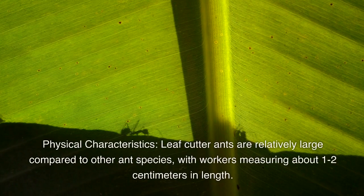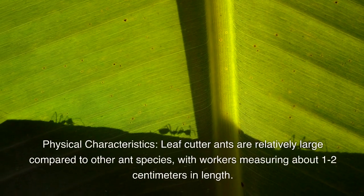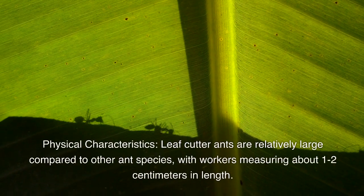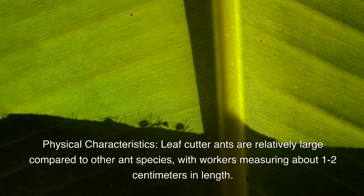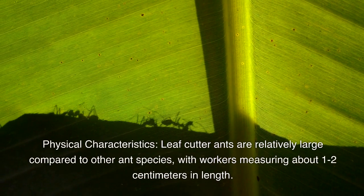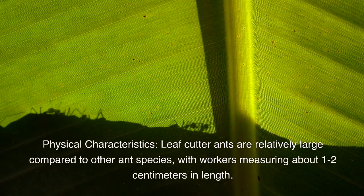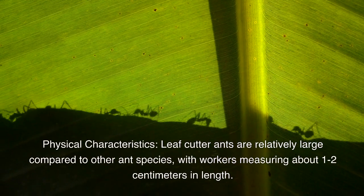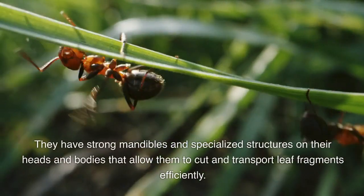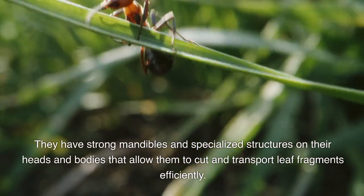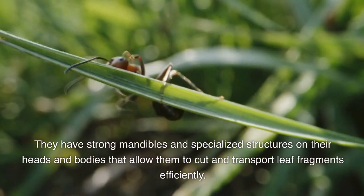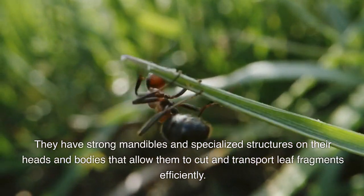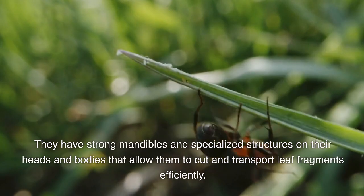Physical characteristics: leafcutter ants are relatively large compared to other ant species, with workers measuring about one to two centimeters in length. They have strong mandibles and specialized structures on their heads and bodies that allow them to cut and transport leaf fragments efficiently.